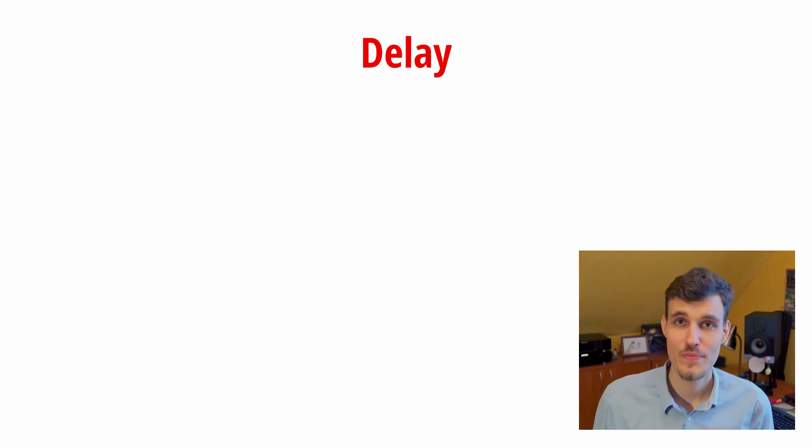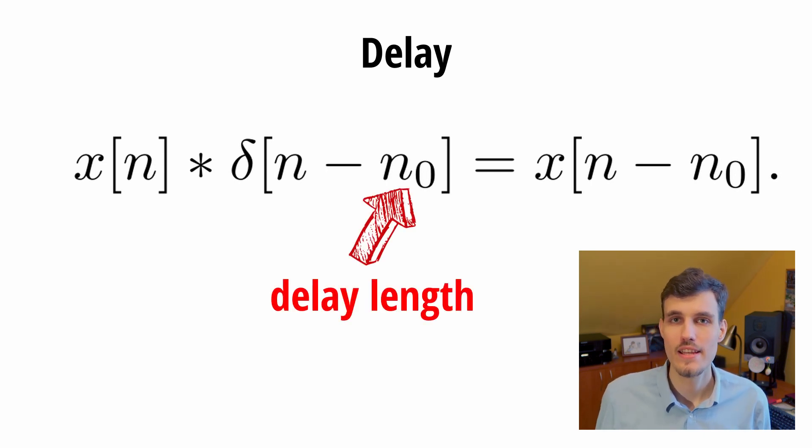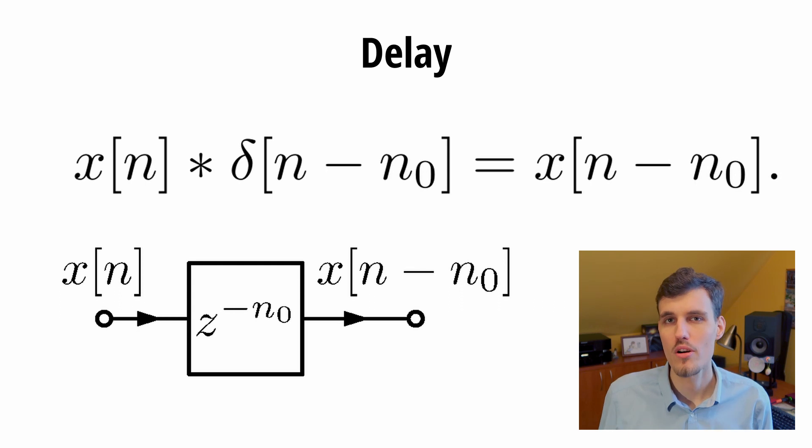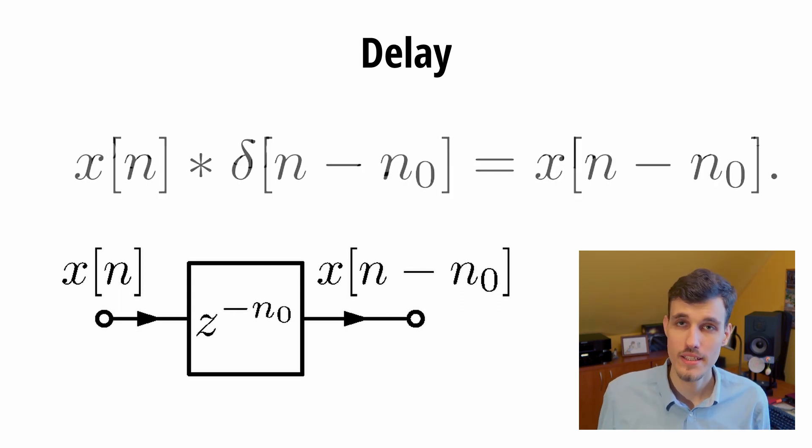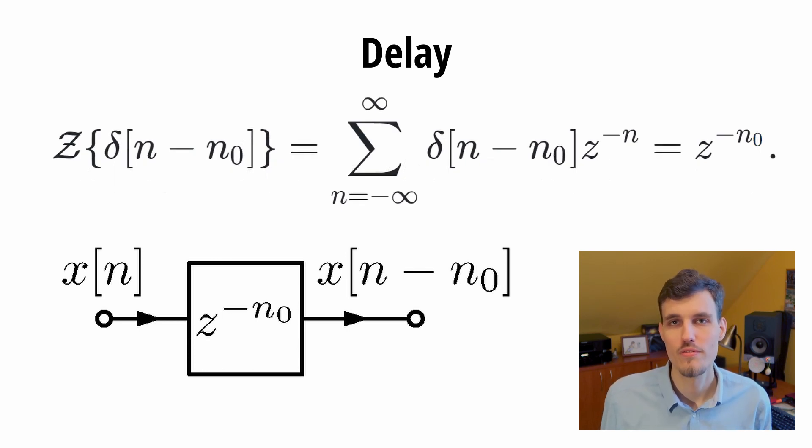More precisely, convolution with delta of n minus n zero delays signal x by n zero samples. n zero in this case is called the delay length. It is often depicted in DSP diagrams as a square box with z to the power of minus n zero in it. That is because the z transform of delta of n minus n zero is exactly equal to z to the power of minus n zero.